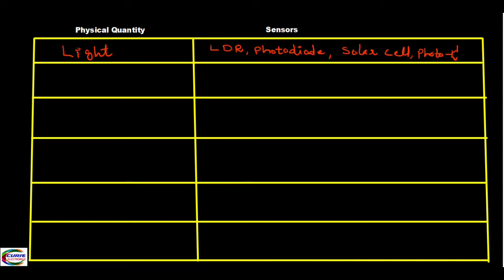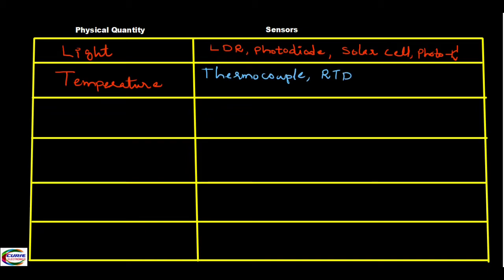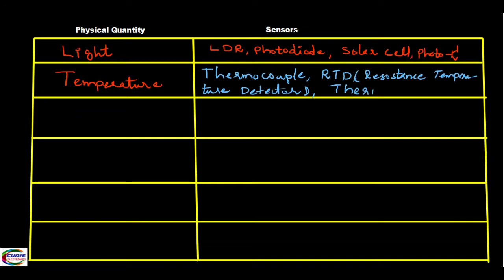The next physical quantity is temperature. For temperature, we have the thermocouple. We also have RTD — Resistance Temperature Detector. Another device used in electronic circuits is the thermistor. In the coming videos, we will see what all these sensors do in detail.